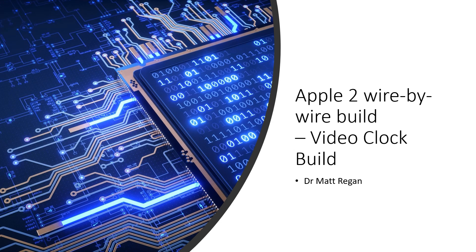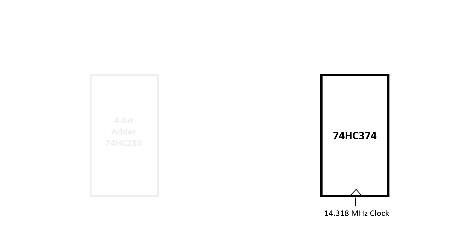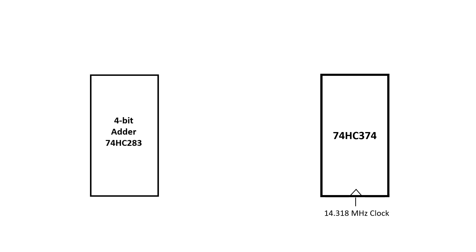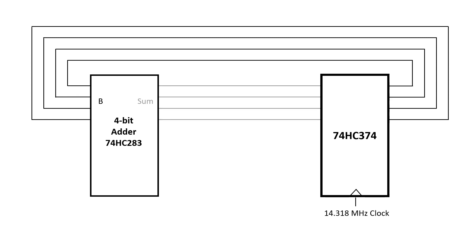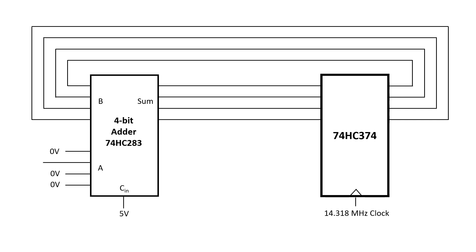I want to go over the circuit we designed in the last video. Here I have my octal D-type flip-flops, which I'm going to clock at 14MHz, and I have a 4-bit adder. I feed the output of the flip-flops back into the adder on the B inputs, and I connect the output of the adder up to the input of the flip-flops. For the other input to the adder, I'm going to set all the lines to 0 except 1. I'll make carry in high, so it always counts up by at least 1.